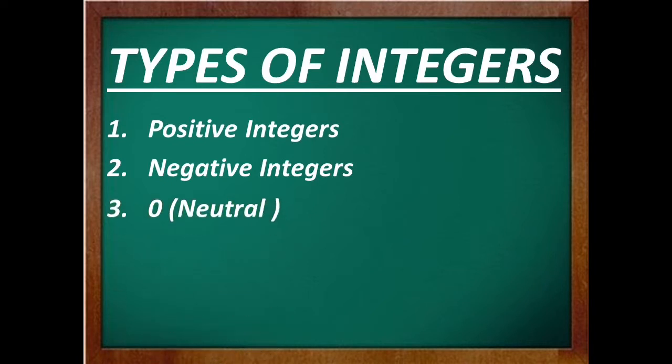The third is 0, where 0 is neither positive nor negative. Or we can say 0 is a neutral integer. Hopefully, it is clear to you.